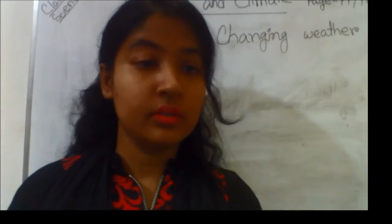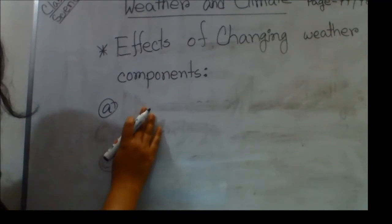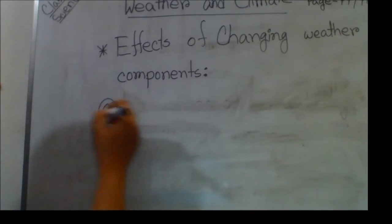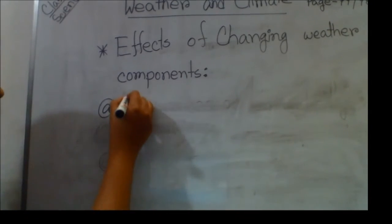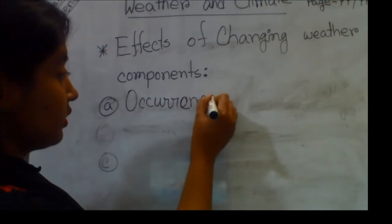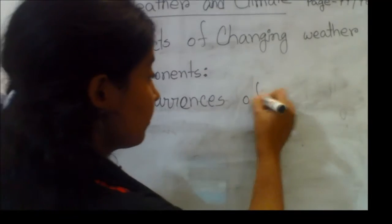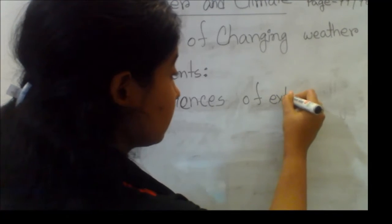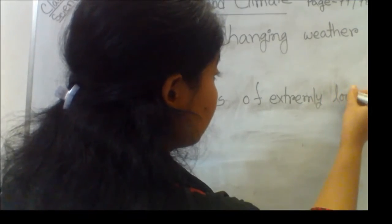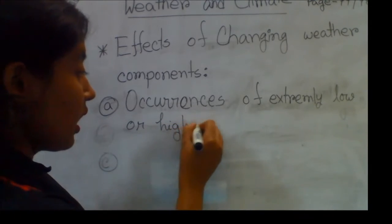The effects of changing weather components: point number one is occurrences of extreme low and high temperature. So write down the point number one: occurrences of extremely low or high temperature.